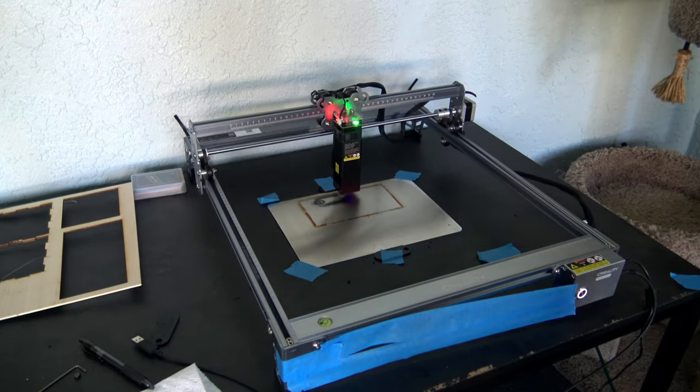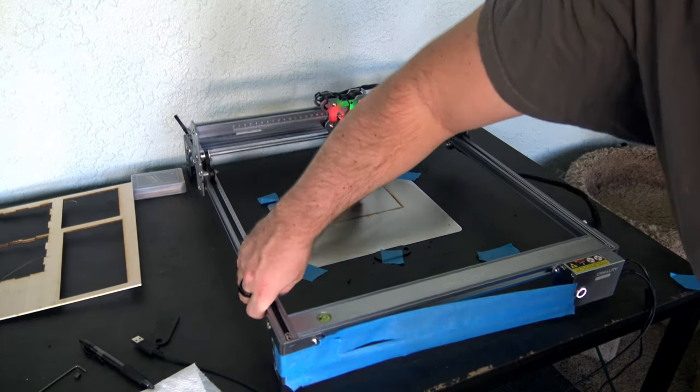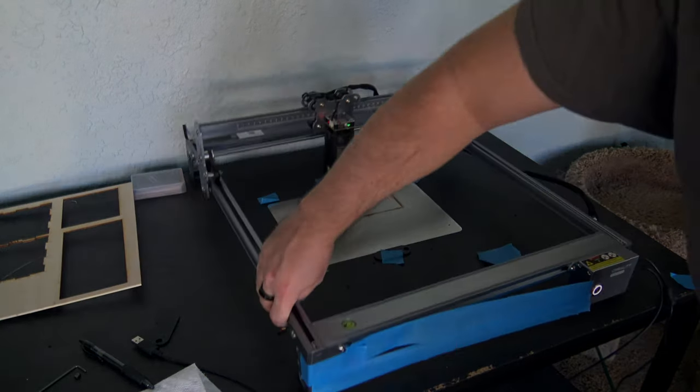Unfortunately, the CR Laser Falcon does not include anything to protect your workbench. You'll want to pick up a thin sheet of steel or aluminum to protect your table while you cut.